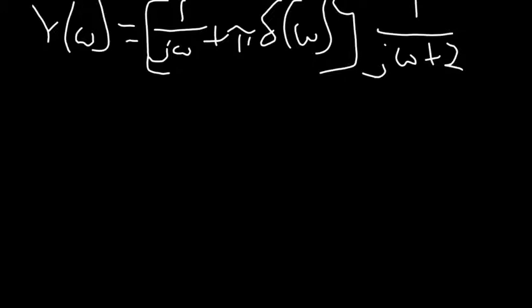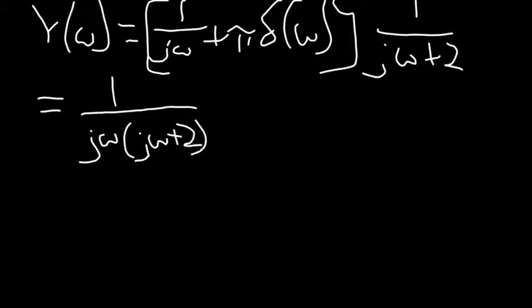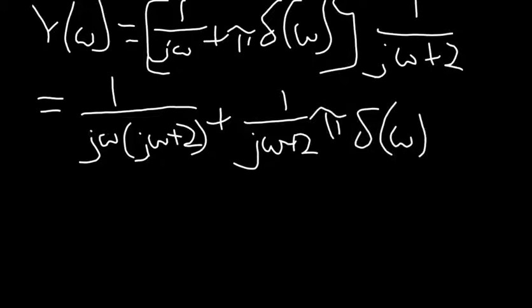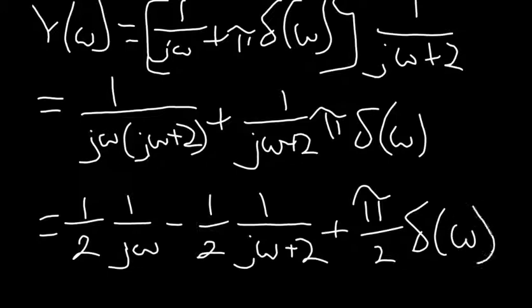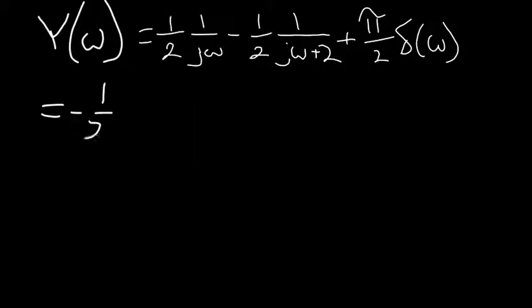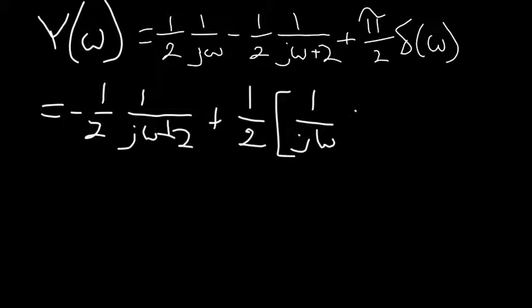Continuing with simplifying Y(ω), we get 1 divided by j-omega times (j-omega plus 2) plus 1 over (j-omega plus 2) times pi times delta(ω), which then, using partial fractions, simplifies further to negative one-half times 1 over (j-omega plus 2) plus one-half times the quantity 1 over j-omega plus pi times delta(ω).